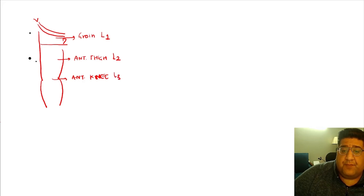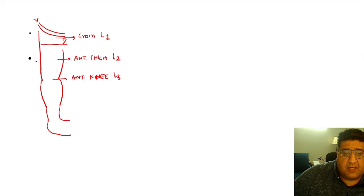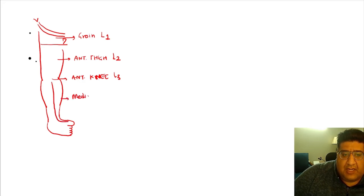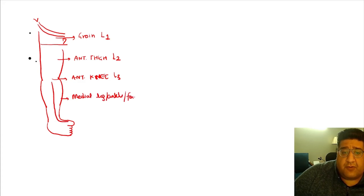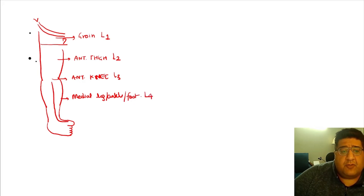Taking this further, the great toe area, then second, third, fourth, and fifth toes, then the medial leg — or medial ankle, or even the medial border of the foot — is supplied by the dermatome L4.